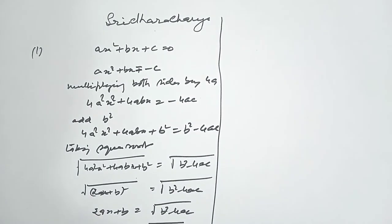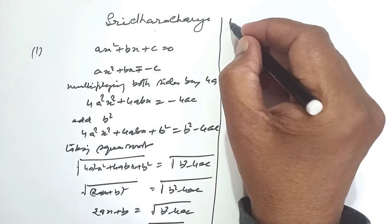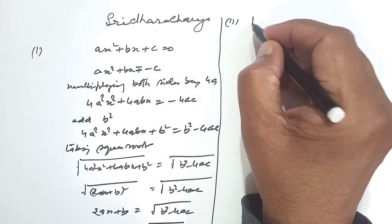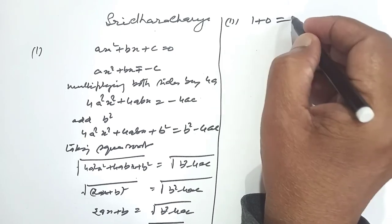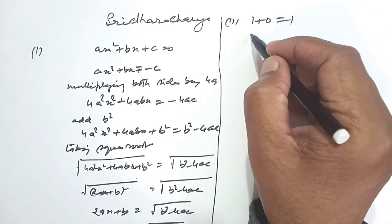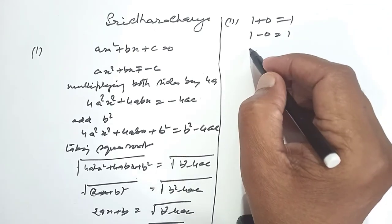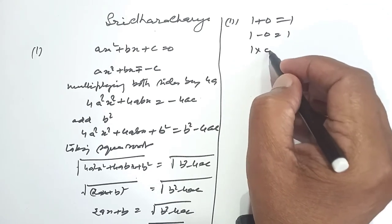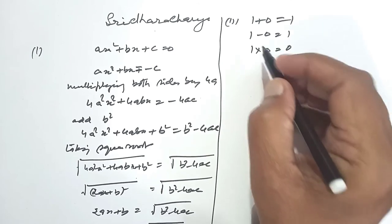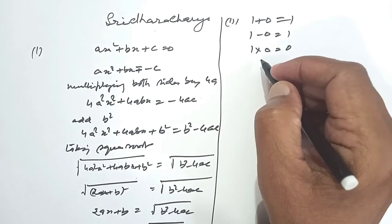Secondly, his second contribution is he has described about zero. If we add 1 to 0, it is 1 itself. When we subtract 0, it remains 1. When we multiply 1 by 0, it becomes 0. And so, he has never described about division.